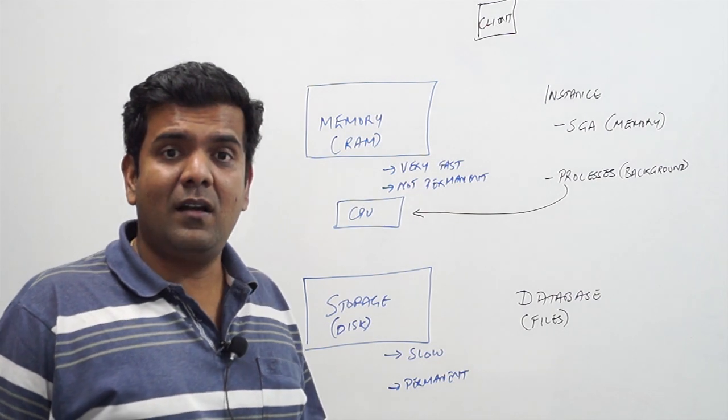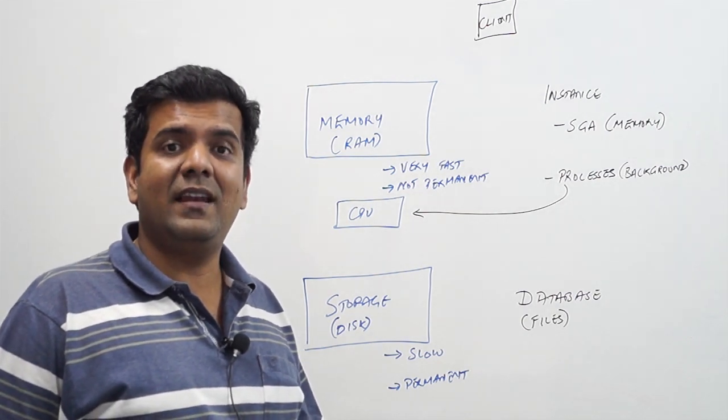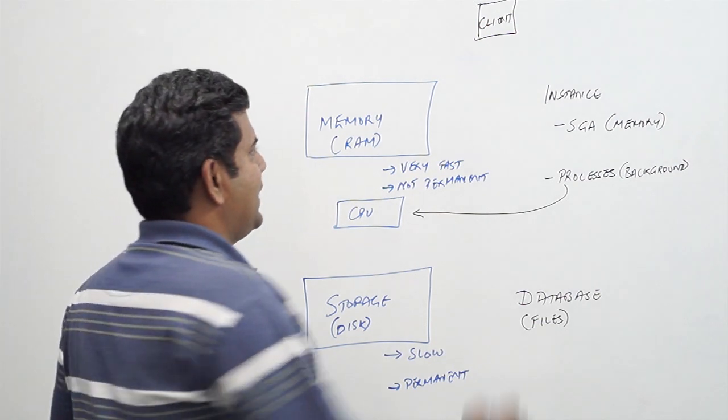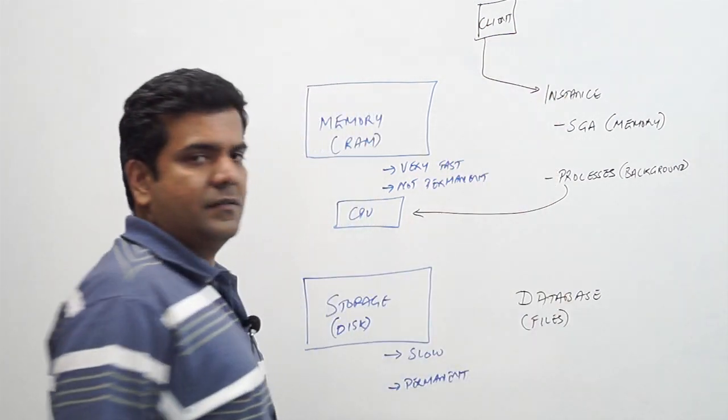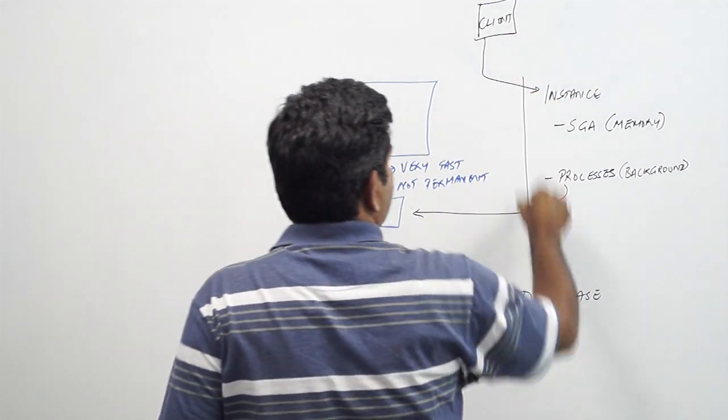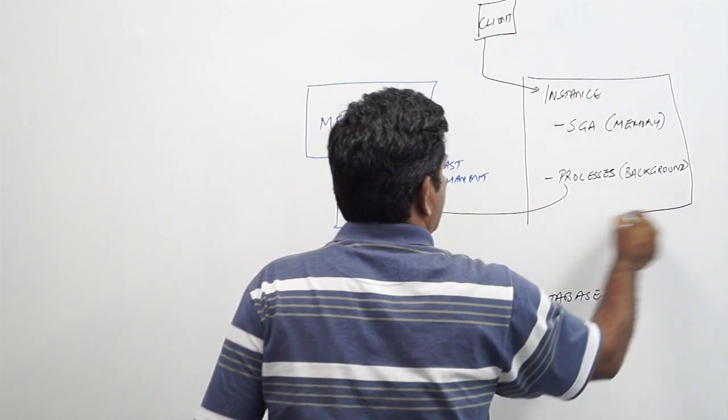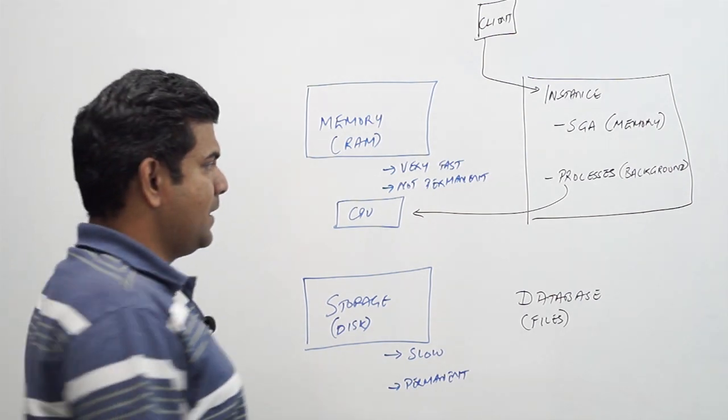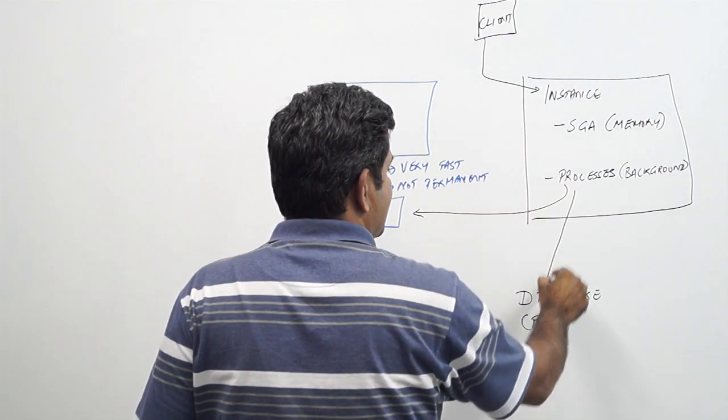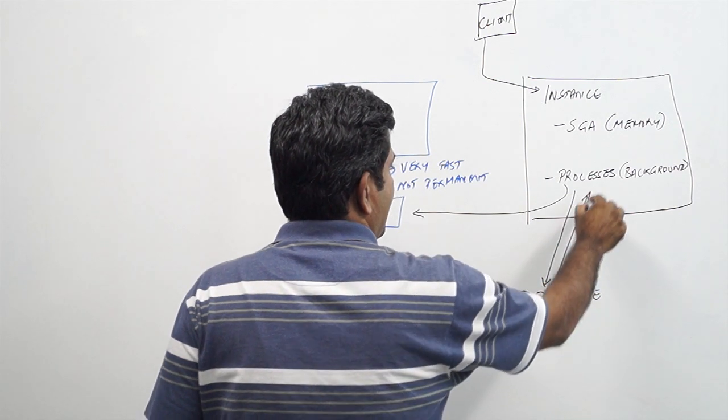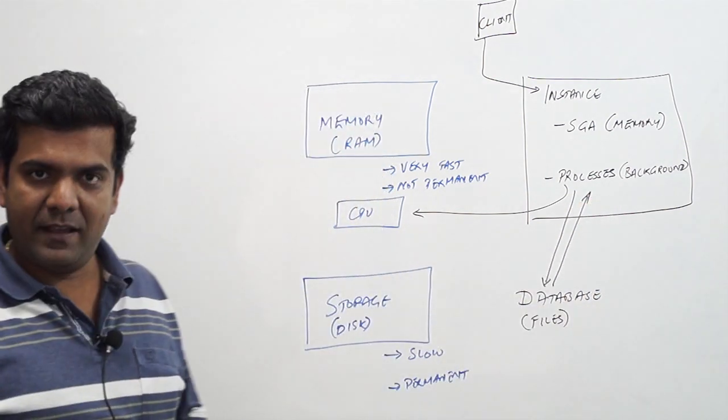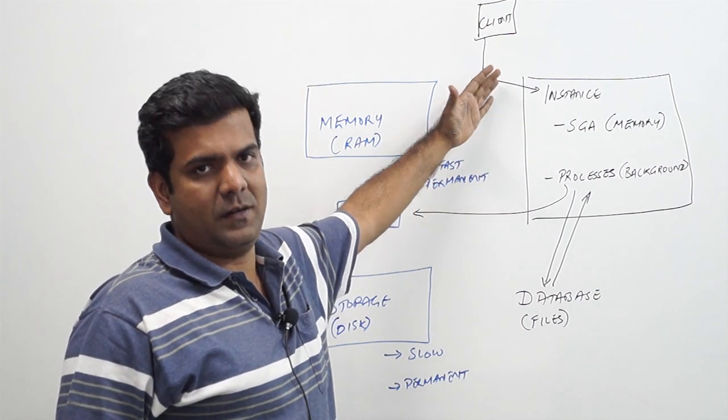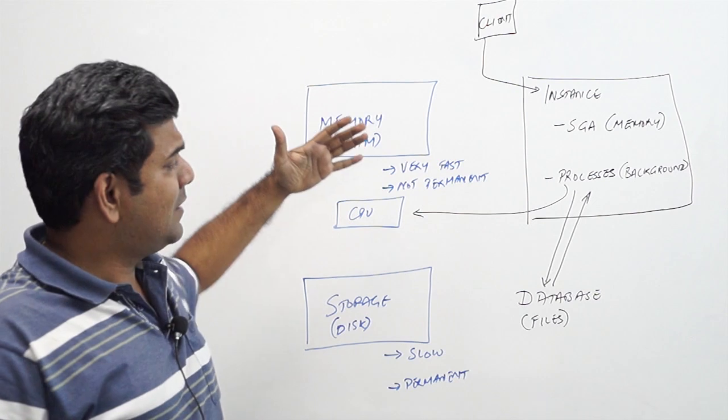Whenever a user says I have connected to the database, he is actually not connected to the database. He actually connects to the instance. And as I showed you, the instance is the combination of SGA and processes, and these processes will interact and fetch data from the database and enable the user to process whatever he wanted.